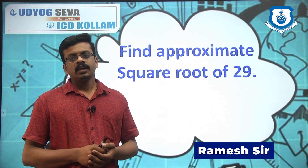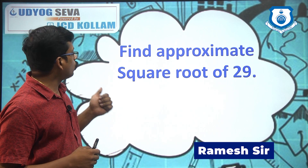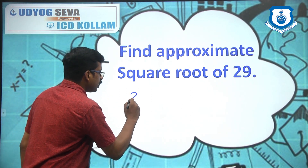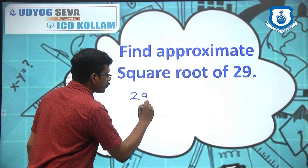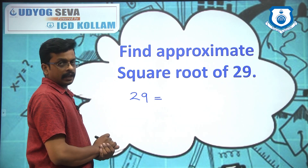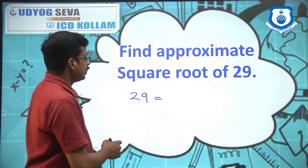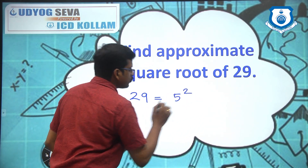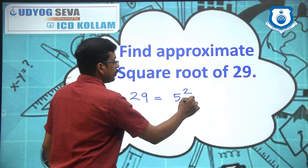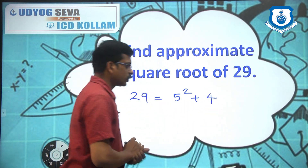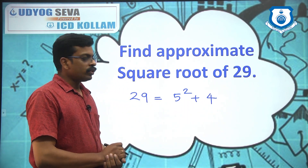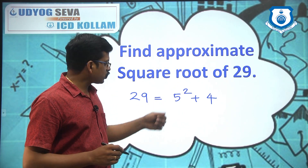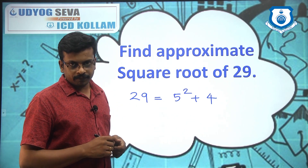First question: find approximate square root of 29. To find approximate square root, I split 29 in such a way that it is a perfect square — 5 squared is 25, plus 4. So it is 5 squared plus 4, meaning your answer should be 5 plus something.